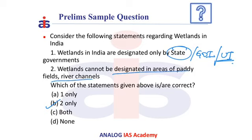Additionally, some protected areas falling within the coastal regulation zone can also not be declared as wetlands.